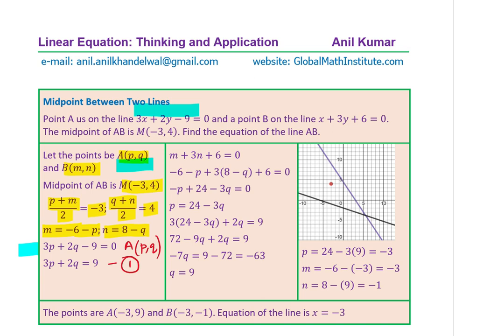Now, the other equation given to us is x plus 3y equals -6. Now, on this, we have a point B, which is (M, N). So we'll substitute M for X and N for Y. So once we do that, we get our equation in terms of M and N.